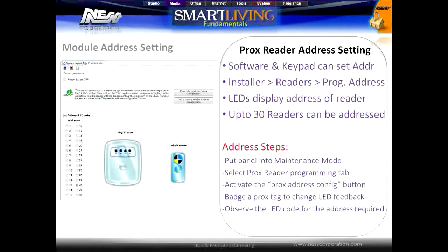To enter address setting mode from the software, first put the panel into maintenance mode, then select the prox reader programming tab and select the button for prox reader address configuration. Perform the same process of badging a card to change the prox reader address. You can select which address you would like a reader to be set to, and the software will show the LED pattern to look out for on the reader.